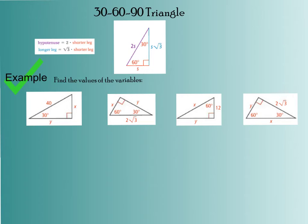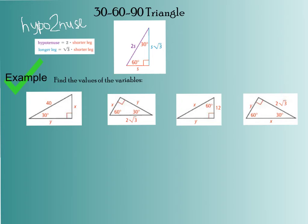Now we're going to talk about the 30-60-90 triangle. The formula involves three sides: the shorter leg, the longer leg, and the hypotenuse — shown here in red, blue, and purple. The key is always knowing the shorter leg first, because everything else is derived from it. The hypotenuse is two times the shorter leg, and the longer leg is the shorter leg multiplied by radical 3. You'll need to memorize these properties.